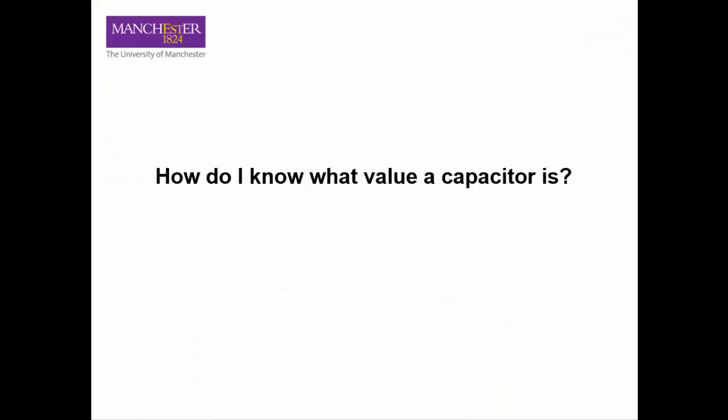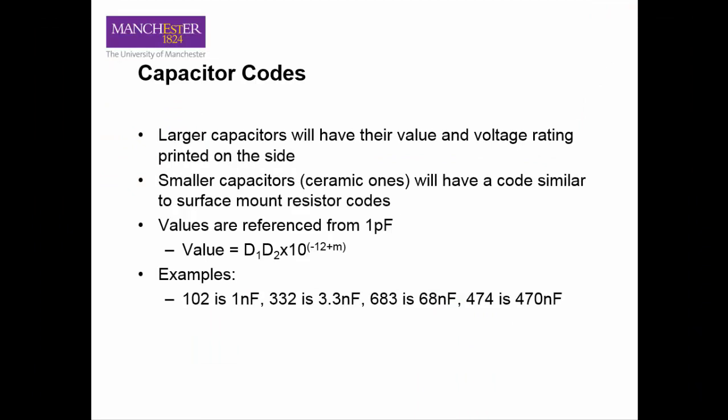How do I know what value a capacitor is? Capacitors have numeric codes on their sides, similar to resistor networks or surface mount resistors. The method of reading it is the same, except that the multiplier is relative to picofarads, or 10 to the power of minus 12, rather than farads, which is 10 to the power of zero. For example, a 102 capacitor would be one nanofarad. A 683 capacitor would be 68 nanofarads.